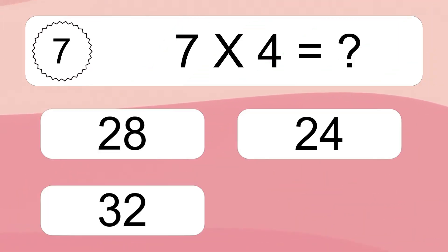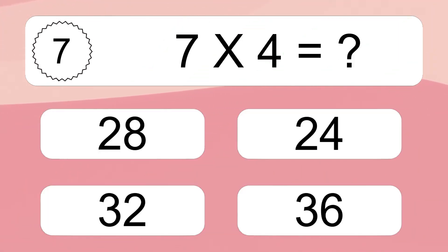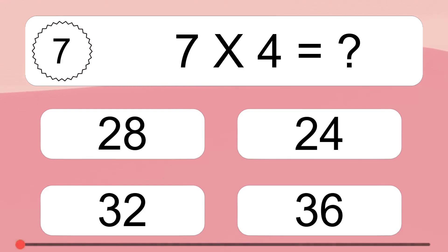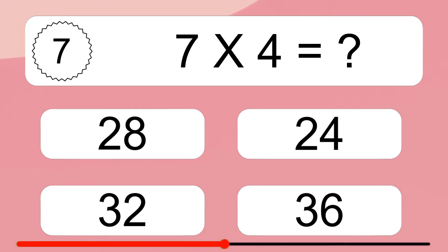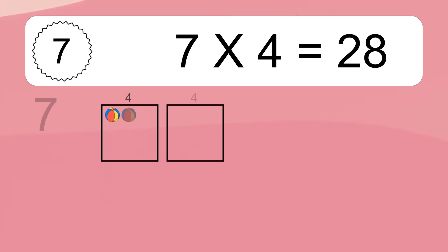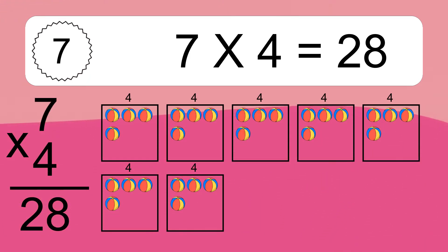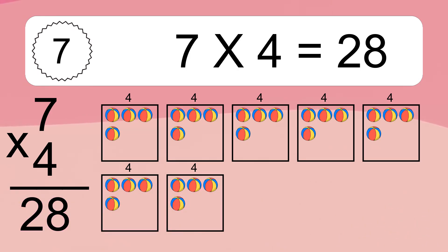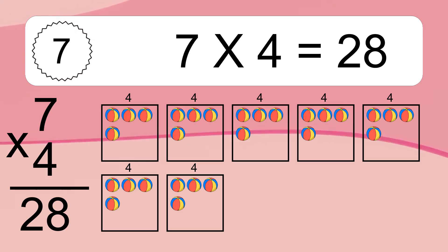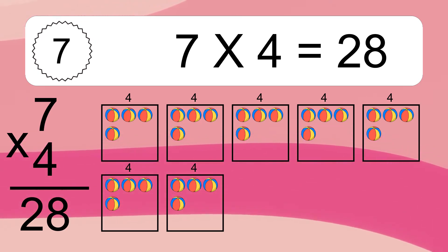7 times 4 equals what? 7 times 4 equals 28. We have 7 boxes, and each box has 4 colorful balls inside. If you count all the balls in all the boxes together, you will have 7 times 4 balls. This equals 28 balls.